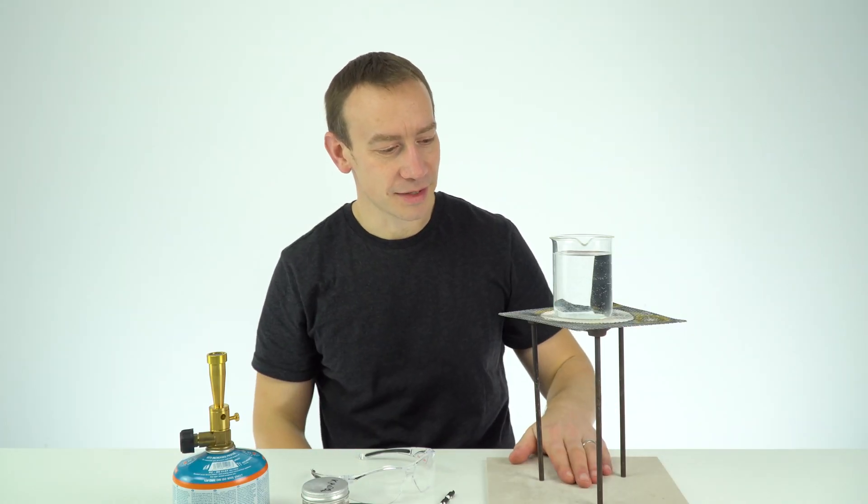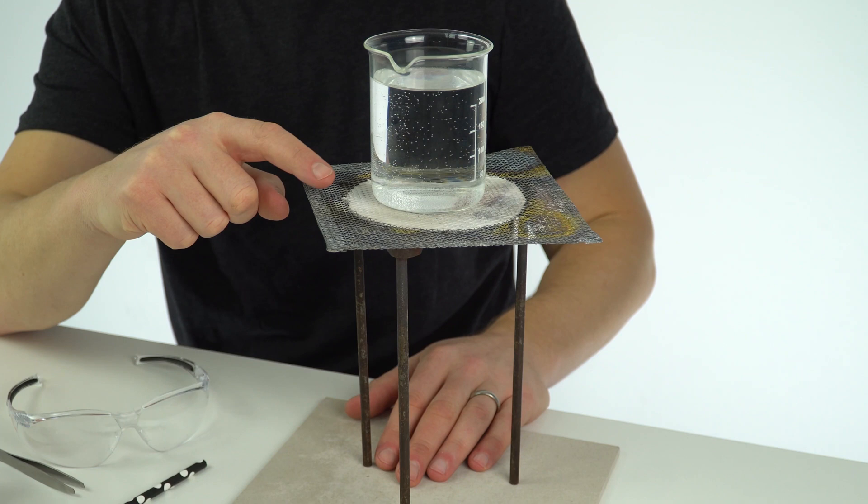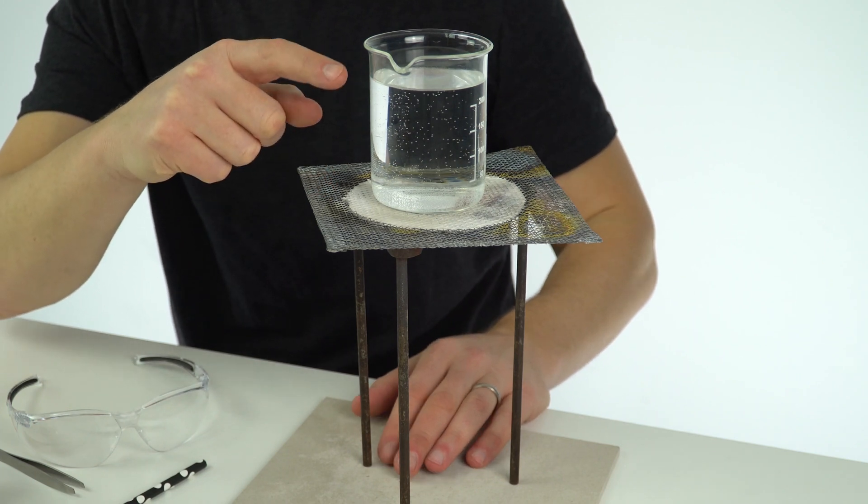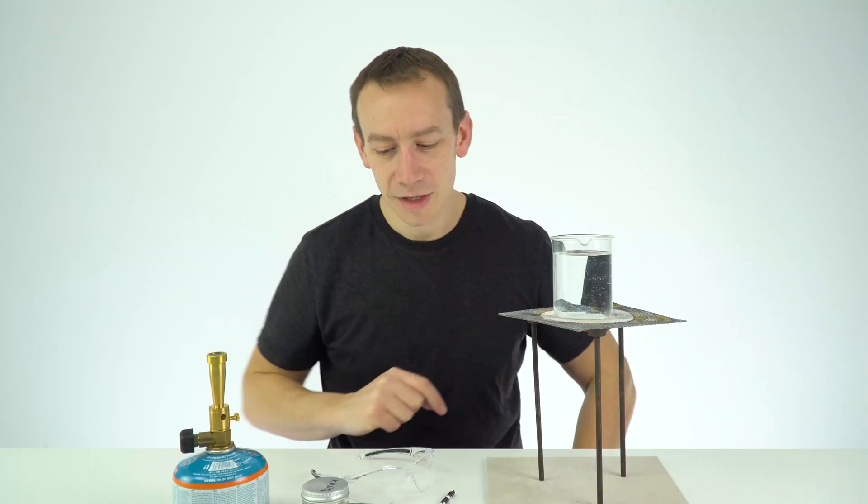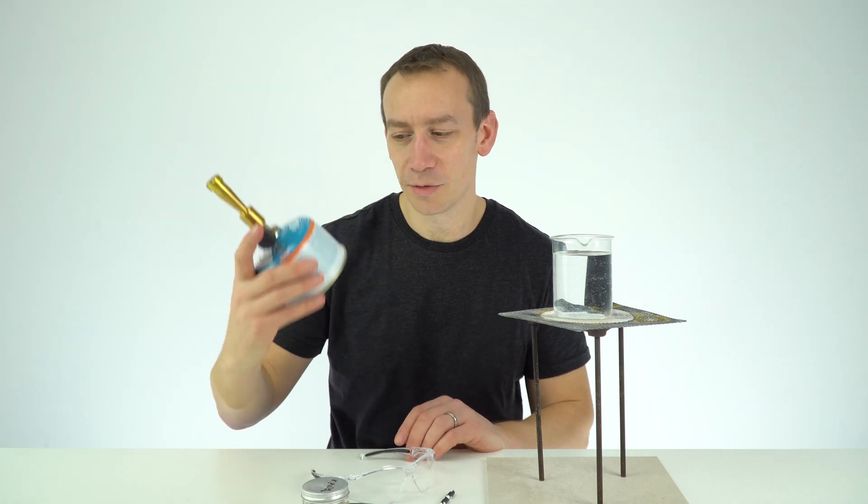The setup is just a heatproof mat down here. I've got a tripod, a gauze on top, and then I've got a beaker that's full of cold water. I also have my Bunsen burner in order to heat it up.